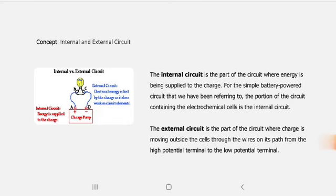So you have actually two forms of circuit. So you have the internal and you have the external. The external circuit is composed of the wires and the electric load or the light bulb. And then the internal circuit is actually yung loob nung battery. So the internal circuit is the part of the circuit where energy is being supplied to the charge. And then external circuit is the part of the circuit where charge is moving outside the cells, the battery cells, through the wires on its path from high potential terminal to the low potential terminal.